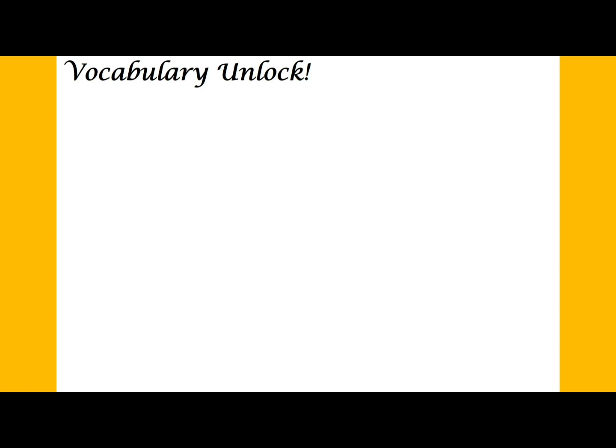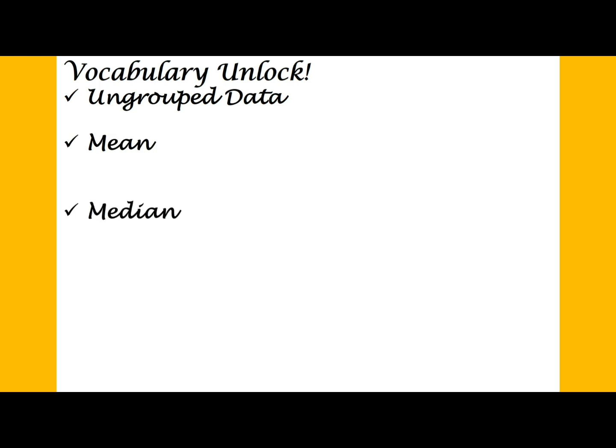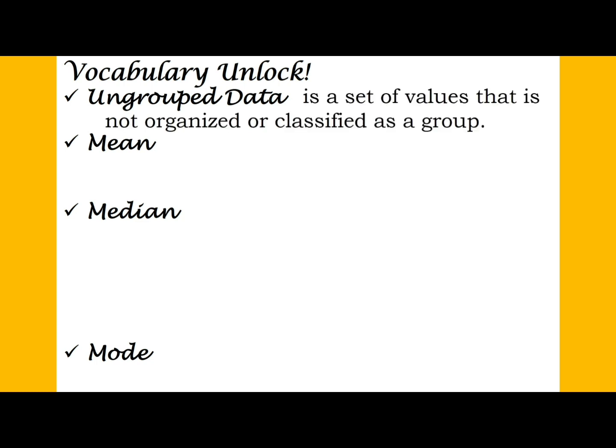Before we proceed, let's have this vocabulary unlock. We have the following words: ungrouped data, mean, median, and mode. When we say ungrouped data, this is a set of values that is not organized or classified as a group — basically, it is just a list of numbers, not sorted in categories or classified.